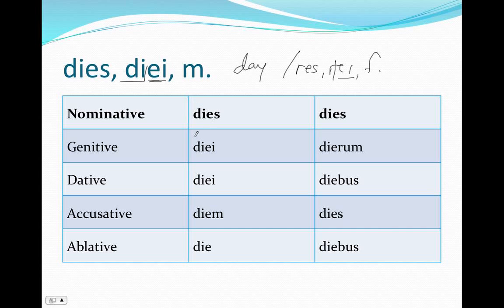Let's take a look at it. Dies, diei, dies, diei, dies, diei, dies, diei, dies, dierum, dies, diebus, dies, diebus. You'll notice that the e is the dominant vowel in this declension.